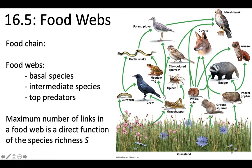You can also have top predators — anything that has only arrows pointing to it and not away from it isn't getting eaten. So weasels, badgers, marsh hawks, and coyotes would be the top predators in this system. The maximum number of links in a food web is going to be a direct function of species richness — the more species you have, the more connections you're going to have in the community.